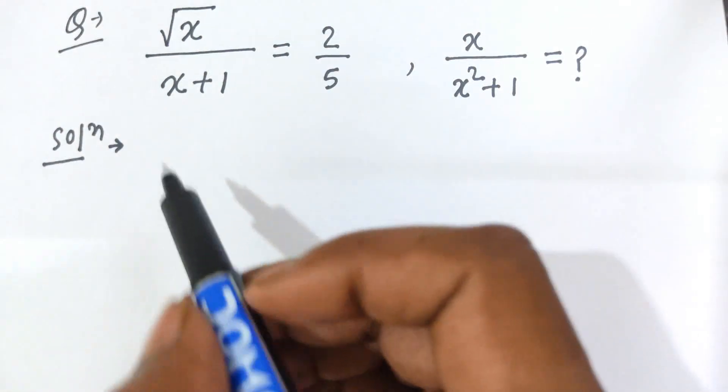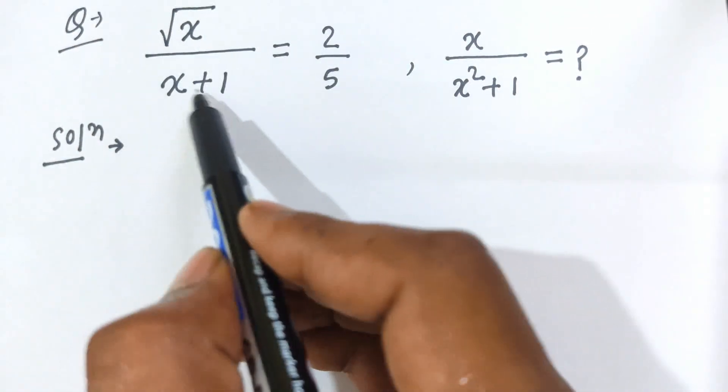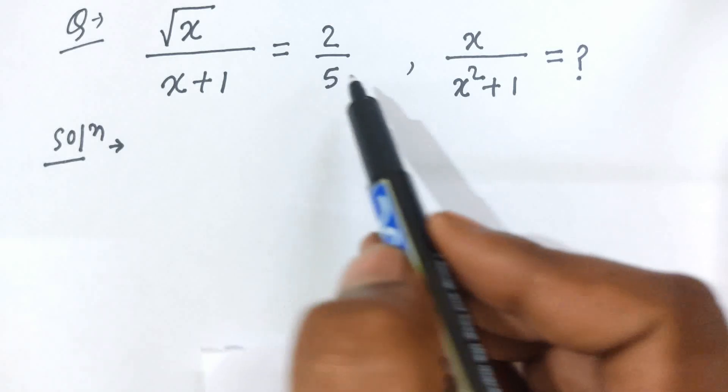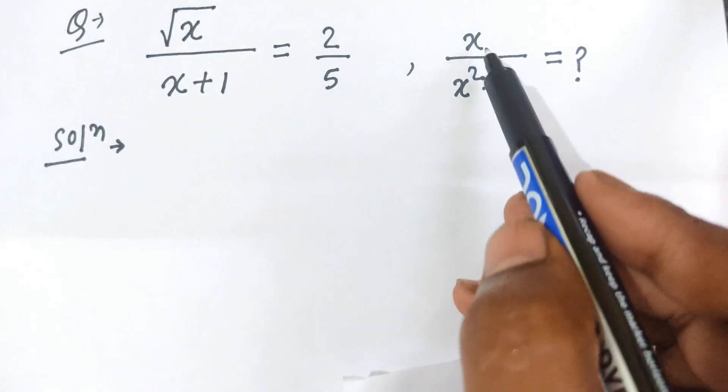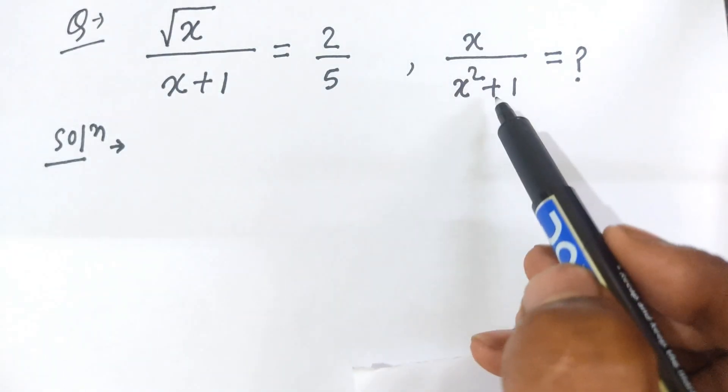Hello students, today's our question is: square root of x divided by x plus 1, this is equal to 2 by 5, and we will find out the value of x divided by x square plus 1.